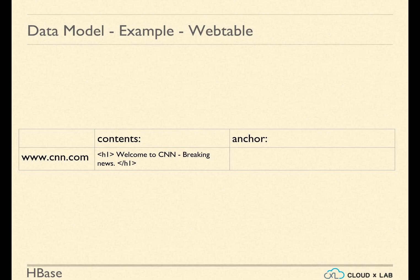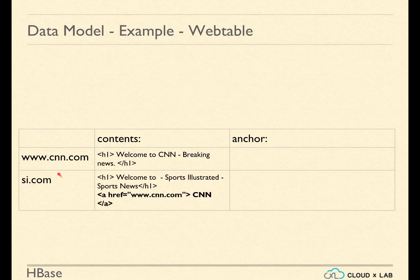This is stored in HBase in a table with two column families: contents and anchor. As the crawler crawls CNN.com's website, it first creates a row with the row key as the URL and adds a value in the HTML column in the contents column family. After a while, the crawler crawls si.com and creates a record for it. It also notices that the contents contain a link to CNN.com, so it adds a column si.com to the anchor column family and adds the value for the row CNN.com as CNN.